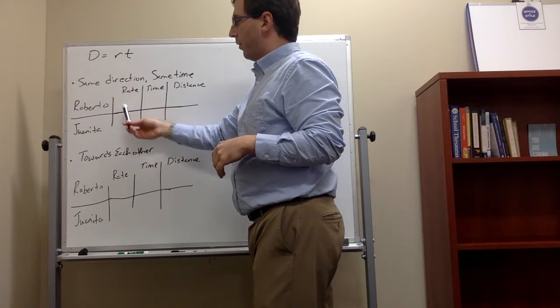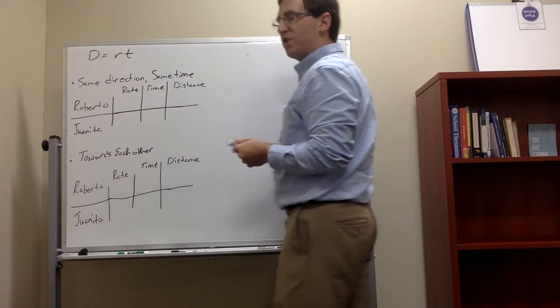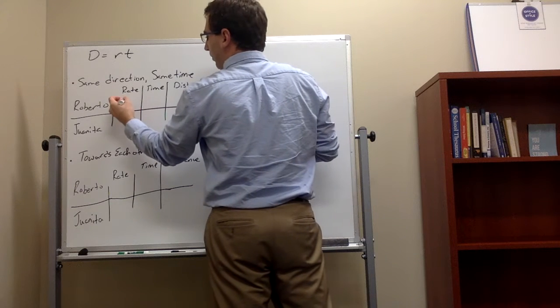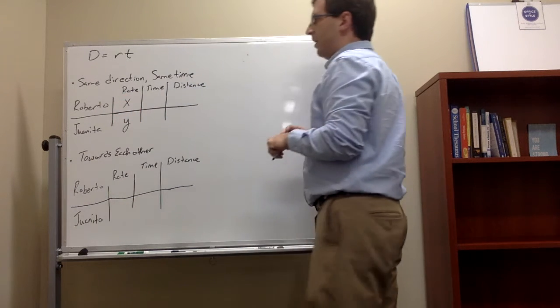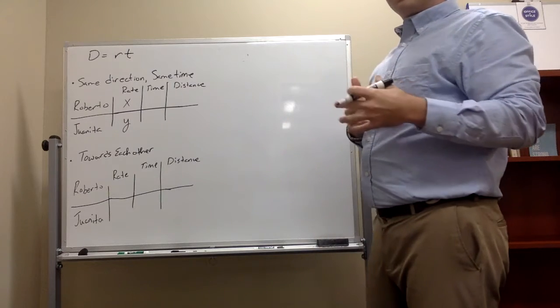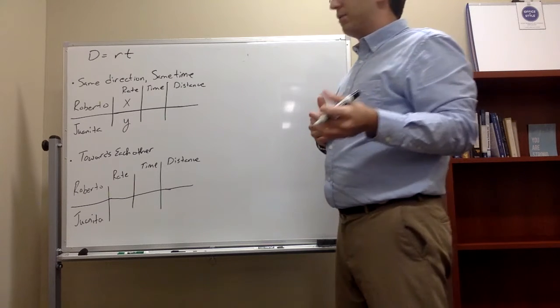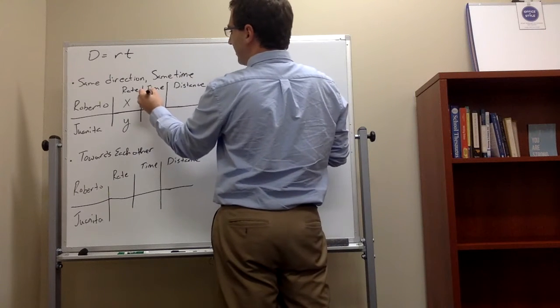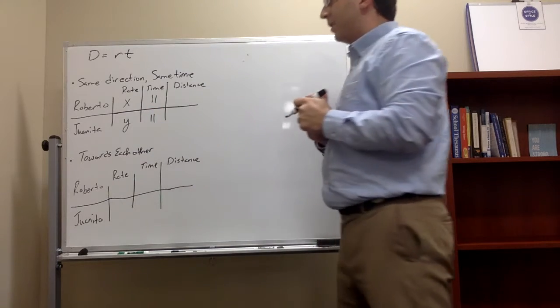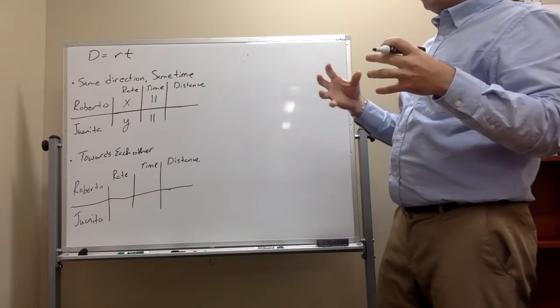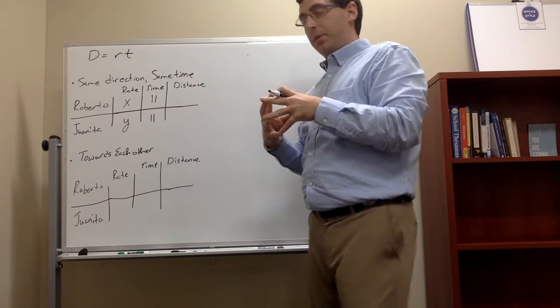Now that's going to play a lot whenever we actually set up the system of equations. Talking about Roberto and Juanita, same direction, same time, we have no idea what their speeds are. So we're going to label Roberto's speed as x and Juanita's speed as y. Now we don't necessarily know the time, but we do know that they overtake each other 11 hours from now. So the time in this case would be 11 hours for both of them. That's actually when 11 hours after they leave, that's when they actually meet up.